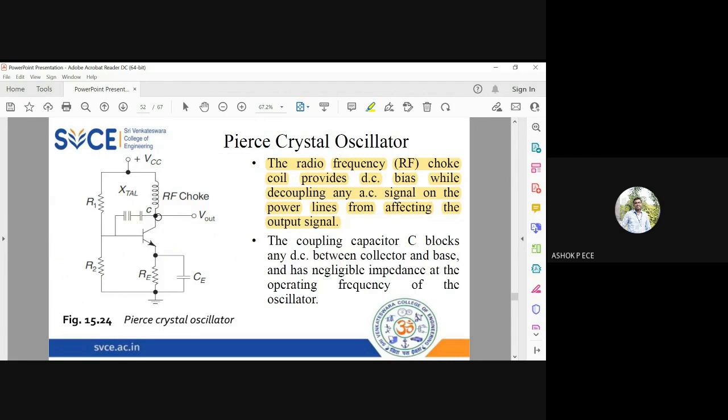And this capacitor CE will block DC and allow only AC signal. The capacitor is going to block DC and allow AC.